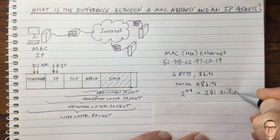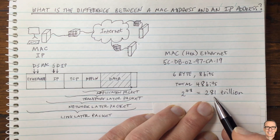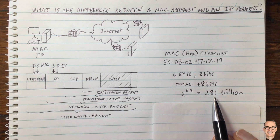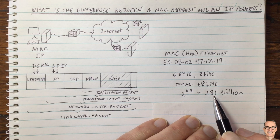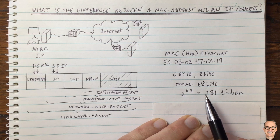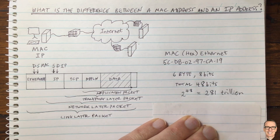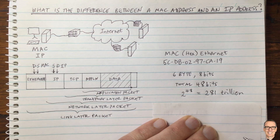281 trillion addresses is enough for every computer element on the planet — at least for now. Because of this, when network interface cards are manufactured and put into computers and other devices connecting to an Ethernet network, they are given a specific MAC address during manufacturing. Each device has its own unique MAC address, and you can sometimes see it printed on the bottom of a computer.